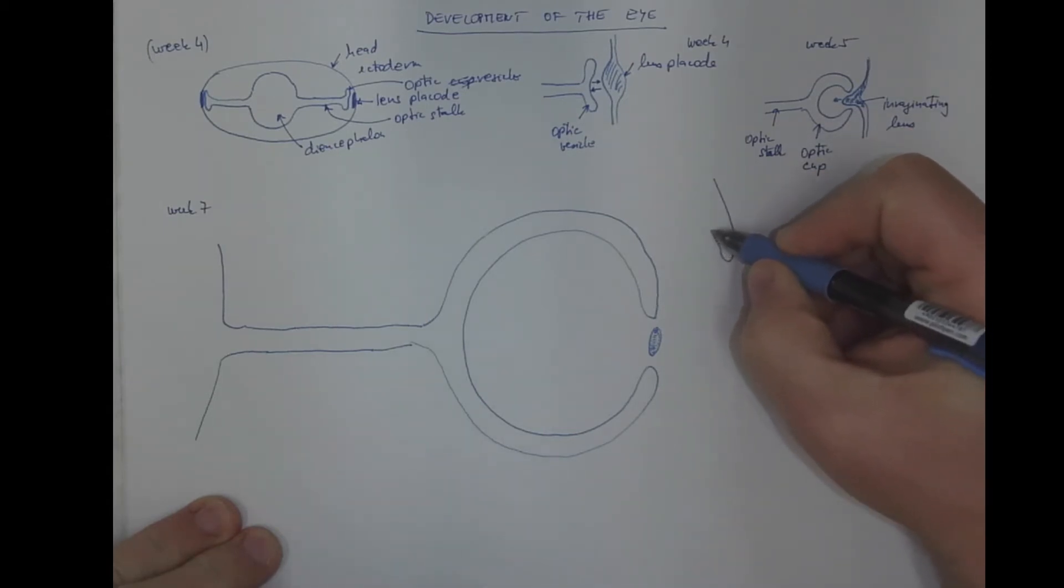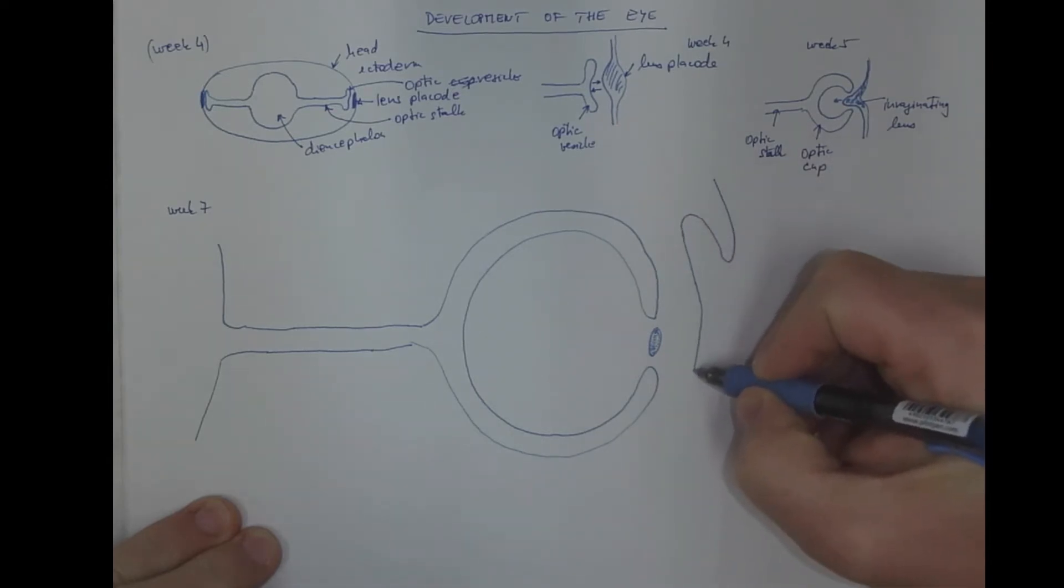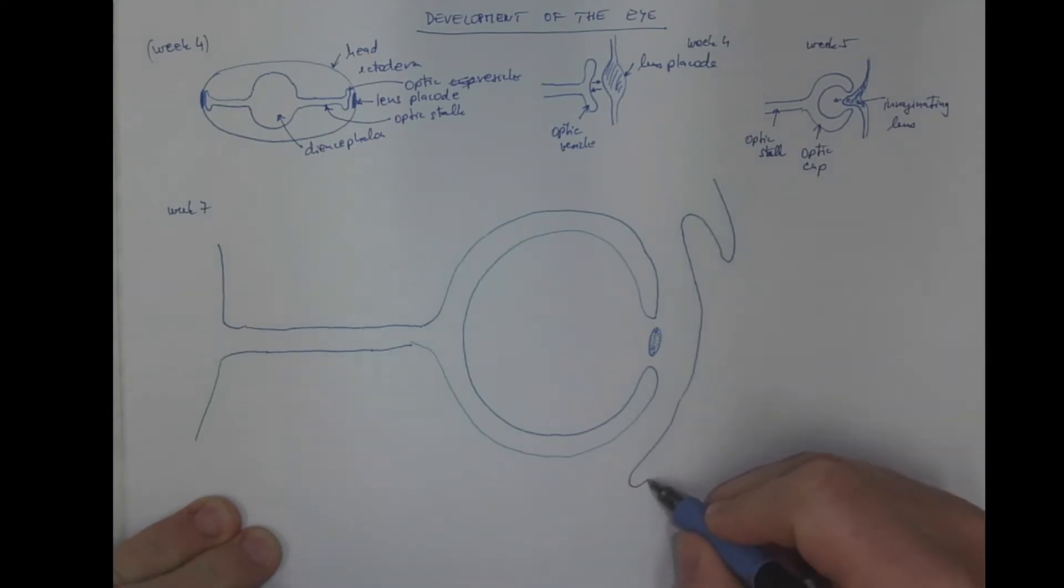On the surface structures are already present. It's the palpebra, the conjunctiva sac, the cornea, and lower palpebra.